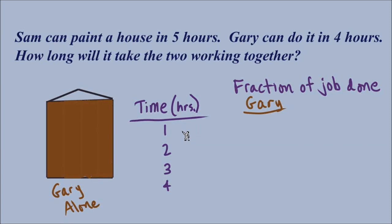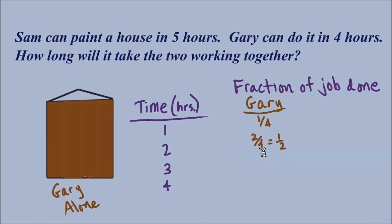Let's put this in a quick table. We list the hours one, two, three, and four, and write the fraction of the house that is painted. After one hour, one-fourth; after two hours, two-fourths or one-half; after three hours, three-fourths; and after four hours, the fourth-fourth or one whole is finished.